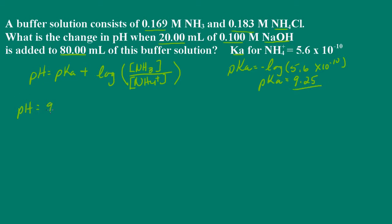So pH is equal to 9.25 plus the log of the ammonia concentration, which is 0.169 molar, divided by the ammonium concentration, which is 0.183 molar. Remember, we're dissolving the ammonium chloride in water, which completely dissociates, so we have 0.183 molar ammonium ion. This works out to be a pH of 9.22.